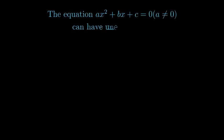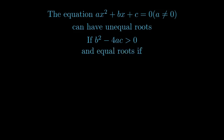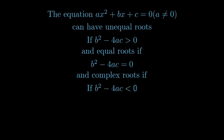The discriminant b² - 4ac can have unequal roots if b² - 4ac > 0, equal roots if b² - 4ac = 0, and if b² - 4ac < 0, then the equation will have imaginary roots or complex roots.